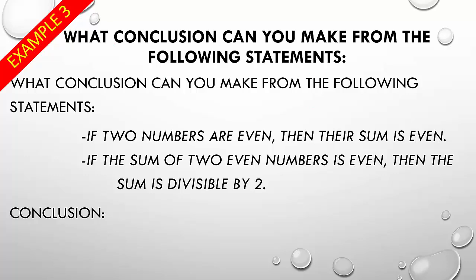Alright. And then, kind of taking that a step further, what conclusion can you make from the following statements? So, if you have these two statements. If two numbers are even, then their sum is even. If the sum of two numbers is even, then the sum is divisible by 2. So, basically, we're saying this, and this is where you're going to kind of use the transitive property. Because we have, if p, and this is where, kind of what I did earlier. So, let's call this p. Alright. And we'll call this q. And since this is the same as this, we'll call that q. And we'll call that r.